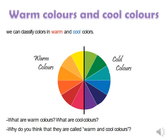We can classify colors into warm and cool colors. You can see the warm colors and the cool colors. What are warm colors? What are cool colors? Why do you think they are called warm and cool colors? When you see this color wheel, I think you'll have the answer. So in this lesson, we're going to answer that question.